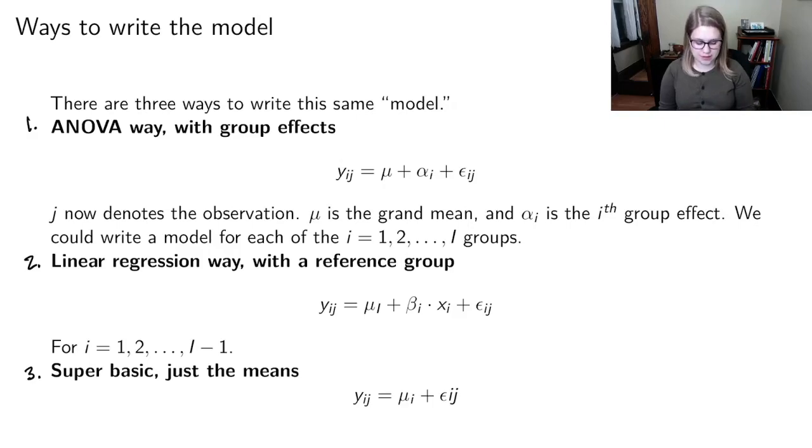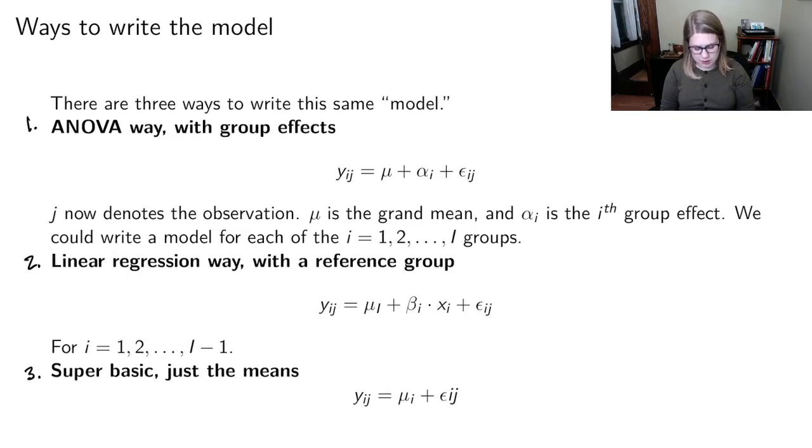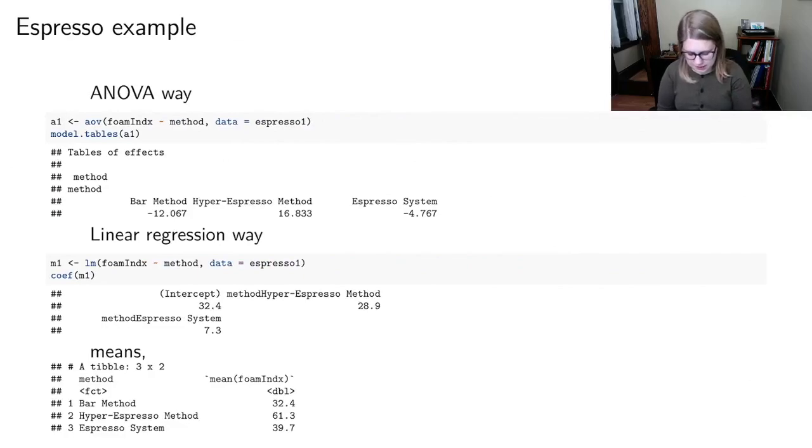I'll apologize in advance. I think some of my notation is going to get a little sloppy in this video. So if you catch inconsistencies, feel free to ask me about them. So let's make this more concrete by thinking about it with the espresso example. So I'm realizing I didn't give you the grand mean. So I'm just going to give that to you right now. So the overall Y bar, the average foaminess of all the espressos was 44.5. And then I also have the group means down here.